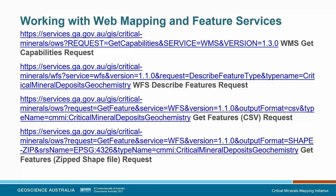This slide shows examples of the various requests you can make of web services. The first URL is a WMS GetCapabilities request, providing basic information about the web service and its layers. The second URL is a WFS DescribeFeatureType request, returning information about the data table such as field names and whether fields are free text or numeric. The third and fourth URLs are GetFeature requests — the first returns data as a CSV format, and the last returns a zipped shapefile as a spatial format.